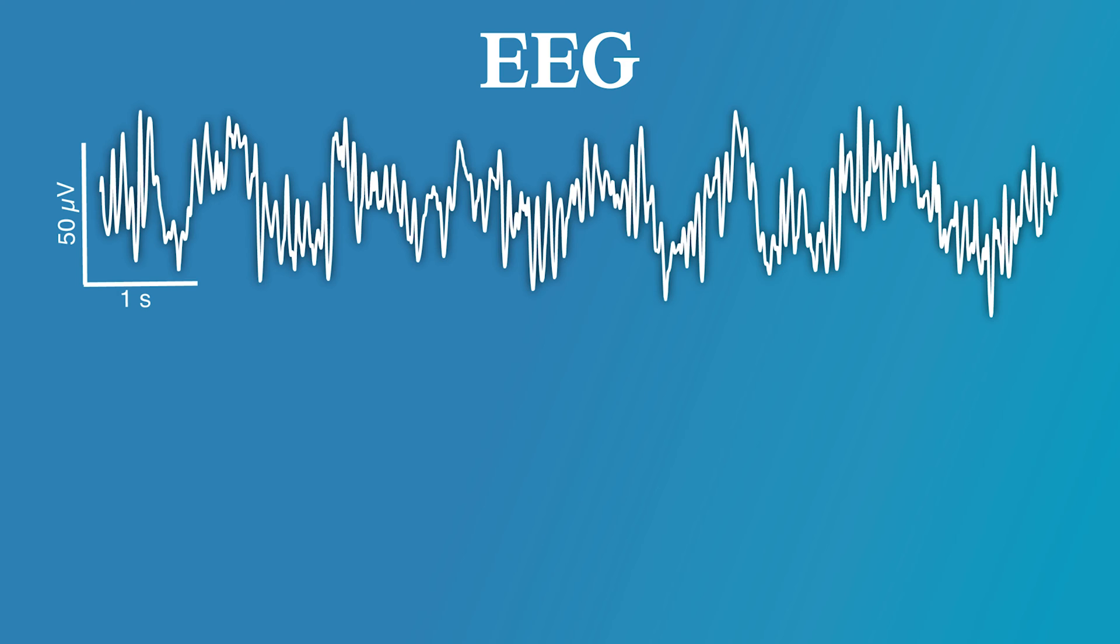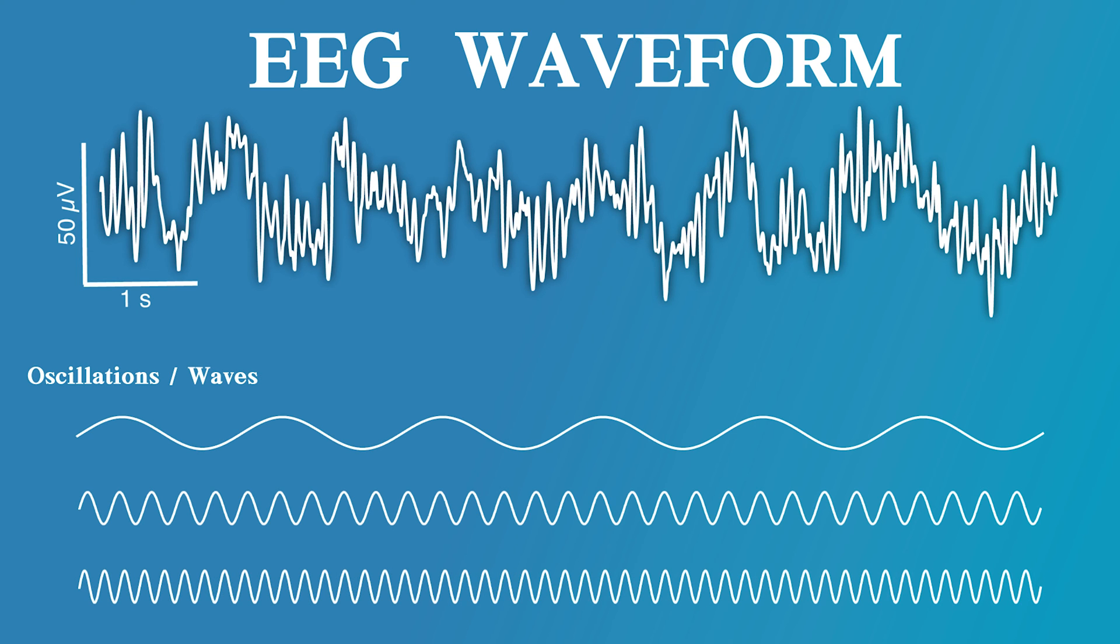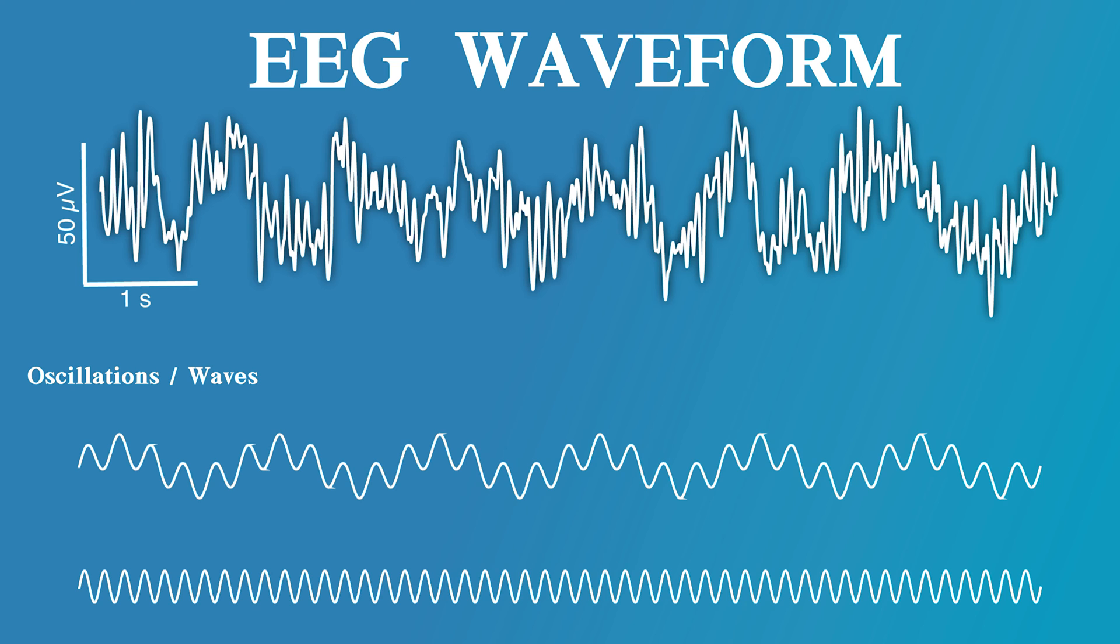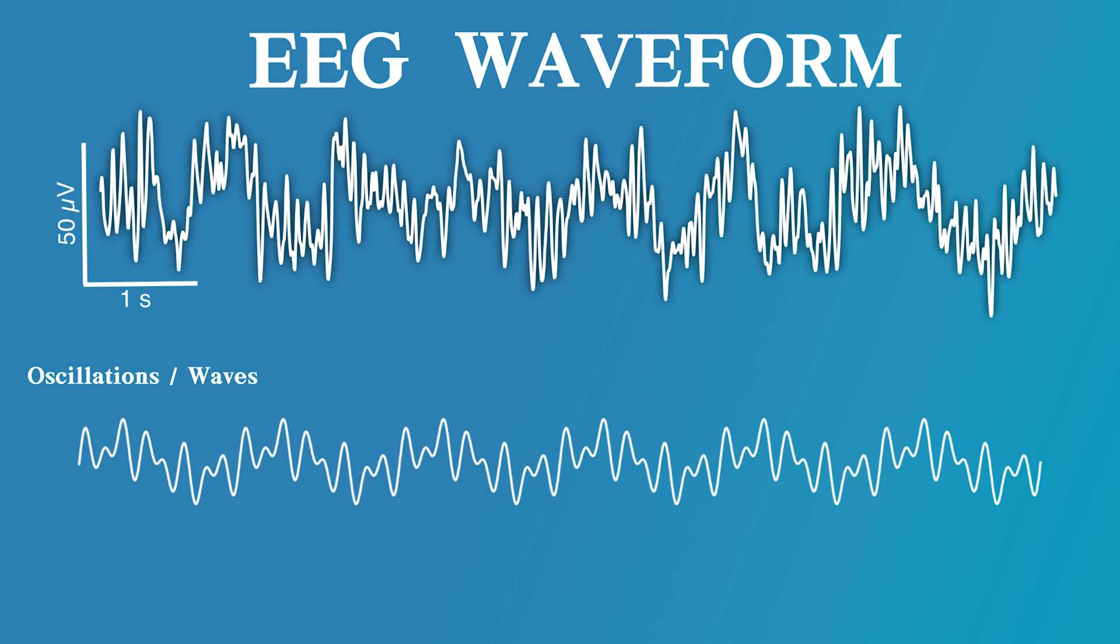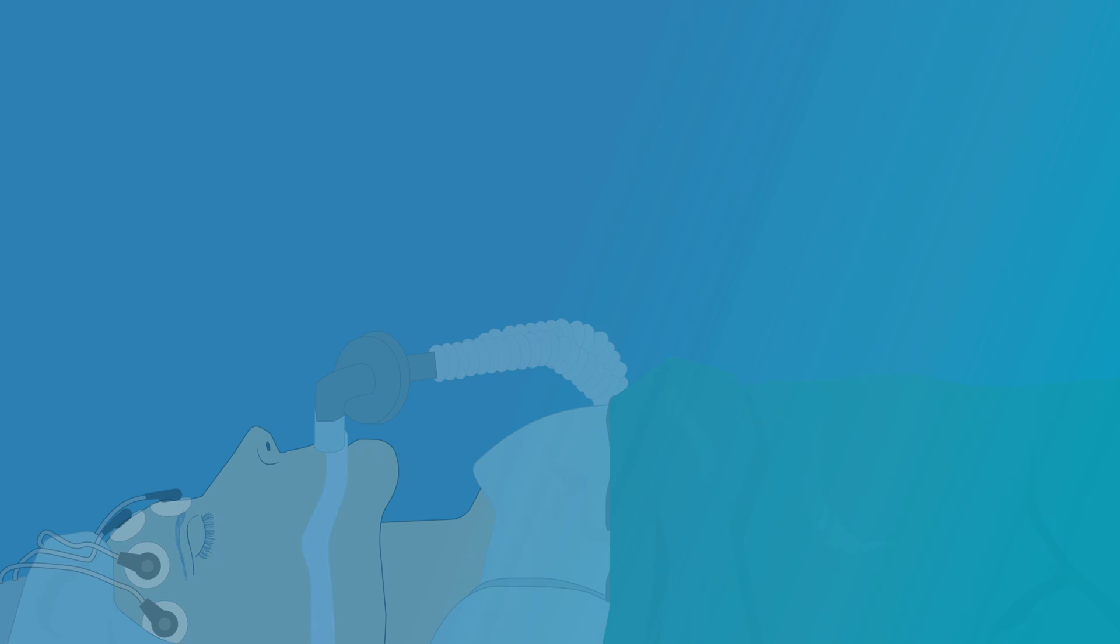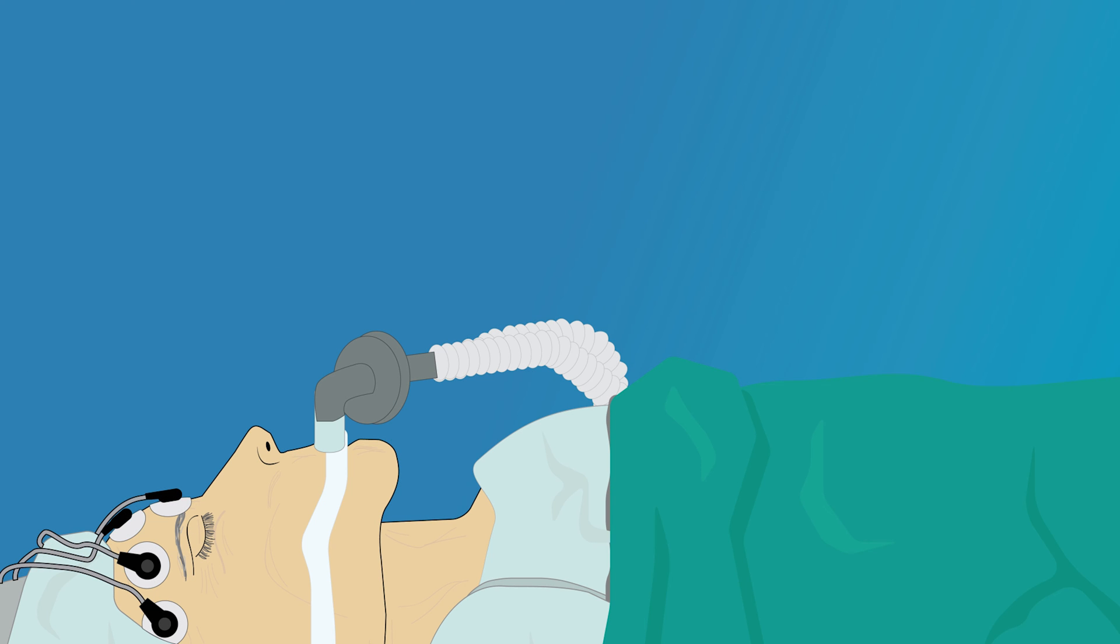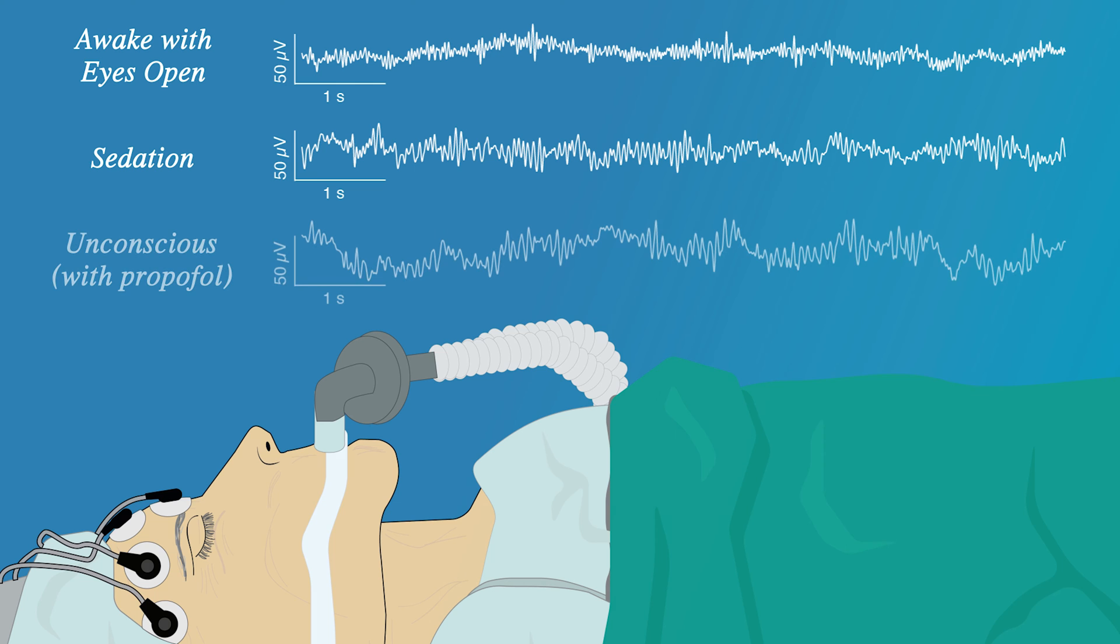The EEG signal is most commonly viewed as a waveform measured in volts. The waveform is composed of oscillations or waves. Oscillations are patterns that repeat themselves over a certain time period or frequency. In the EEG, the frequency is related to how fast synchronous neurons are synapsing. During anesthesia, the oscillations present in the waveform will change as the patient progresses from an awake, eyes-open state through sedation to an unconscious state.